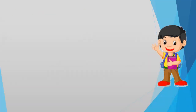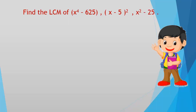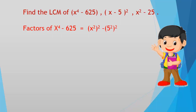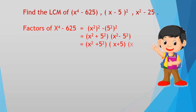Applying the concept to algebraic expressions: Find the LCM of (x⁴ - 625), (x - 5)², and (x² - 25). Factors of x⁴ - 625: this equals (x²)² - (5²)², which factors as (x² + 25)(x + 5)(x - 5).